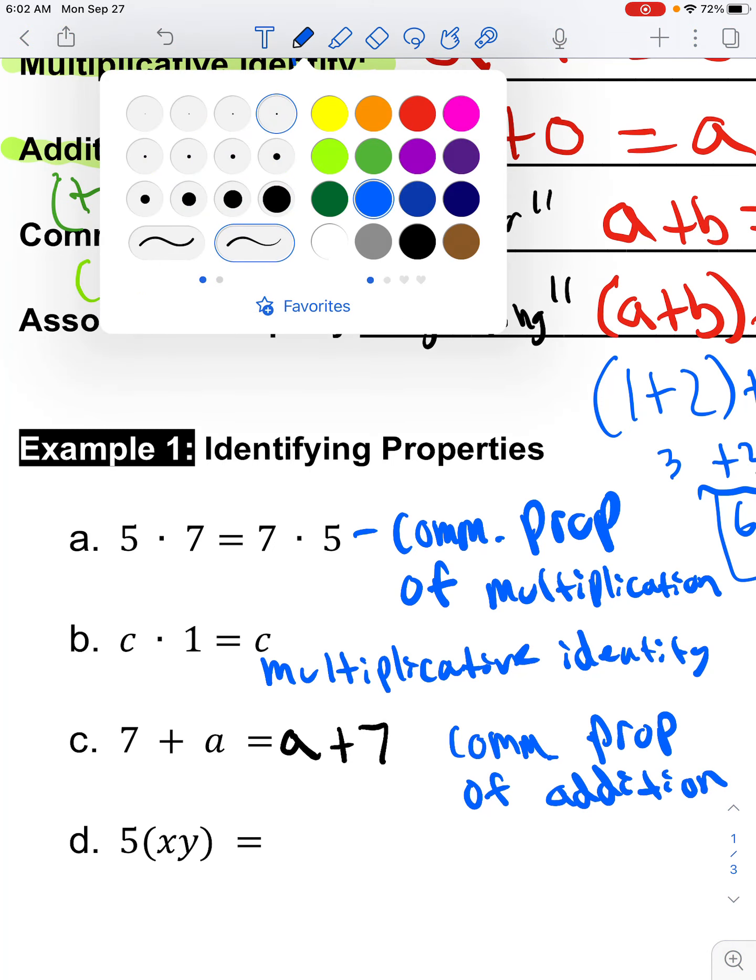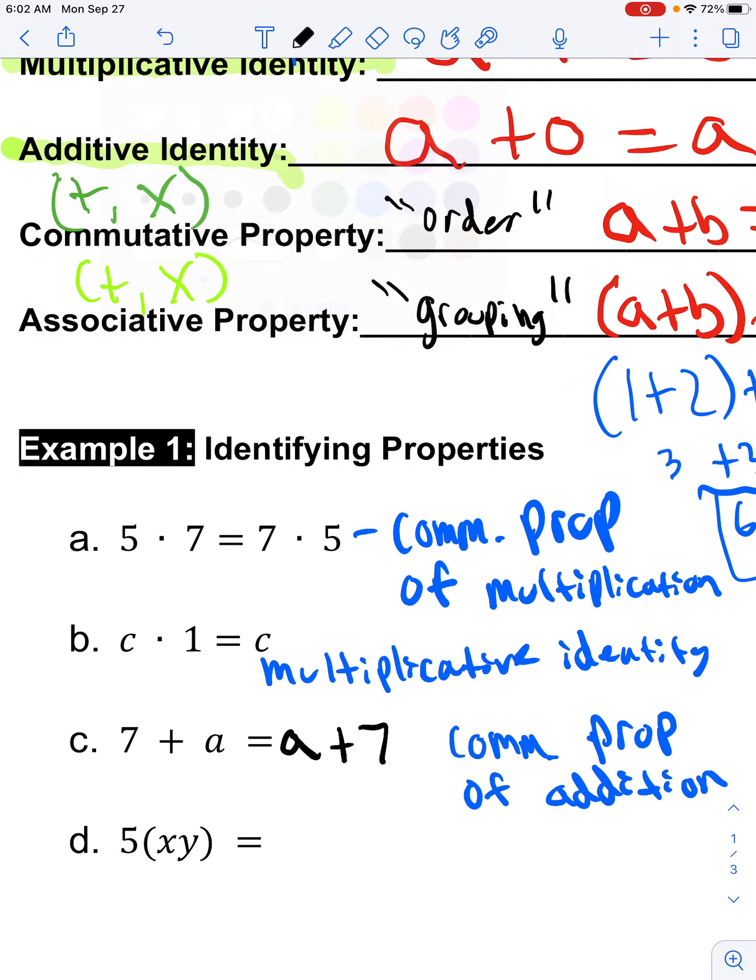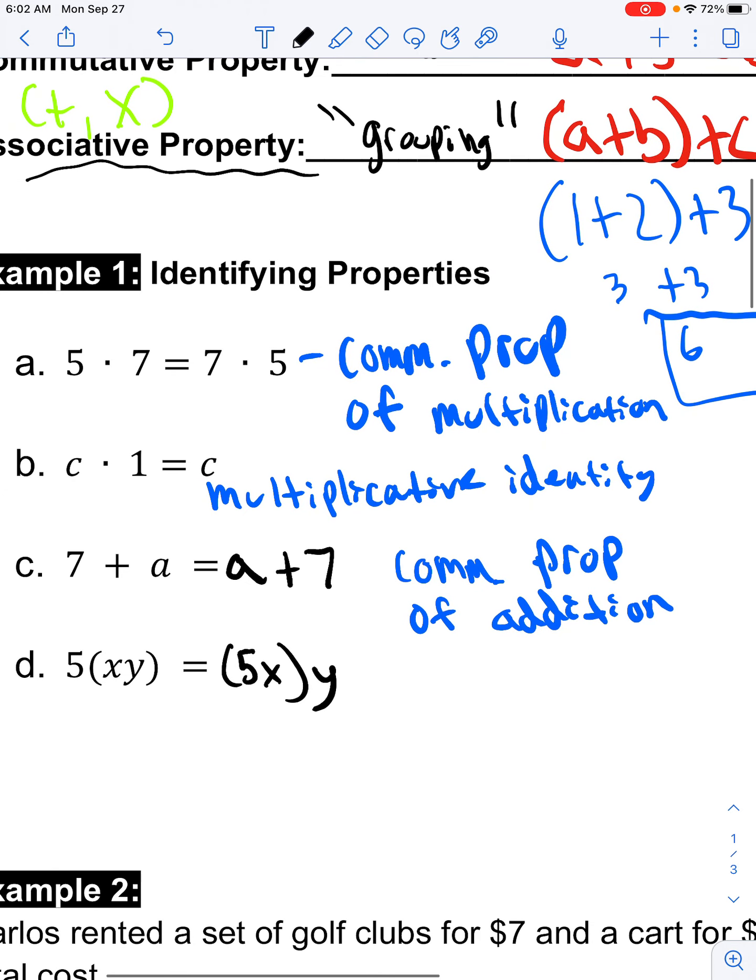Last, but definitely not least, I see I've got parentheses in this one. When you see those grouping symbols, that's a hint that we may be looking at the associative property. So instead of putting my parentheses around x, y, I'm going to say, well, I want to do five times x and then multiply it by y. That's going to be the associative property of multiplication.